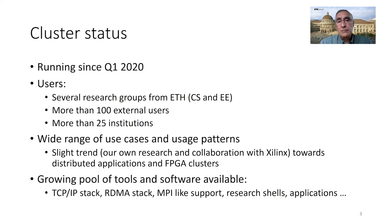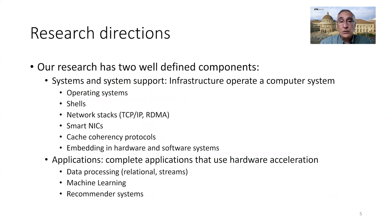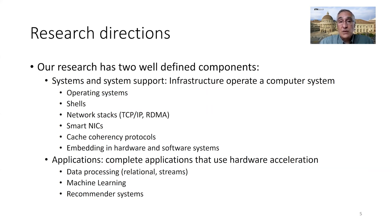The research we do can be classified into two general directions. One is infrastructure — systems and system support — to learn how to actually build clusters, how to deploy FPGAs at larger scale in a data center or cloud environment. This involves work at all levels: operating systems, shells for the FPGA, network stacks for TCP/IP and RDMA, smart NICs, CAS coherency protocols, and how to embed an FPGA into a wider hardware and software ecosystem. The question is how to build the full software ecosystem needed to make it easy to actually use the FPGA.